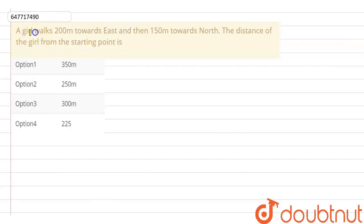Hello students! In this question, a girl walks 200m towards east and then 150m towards north. And we have to find the distance from the starting point.